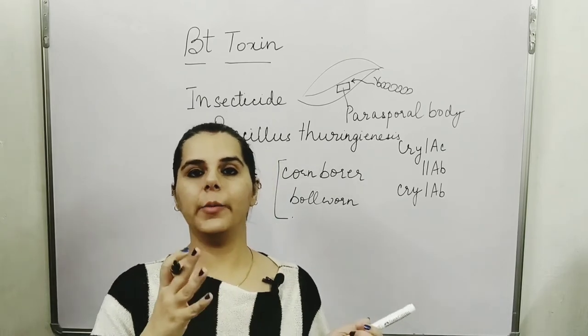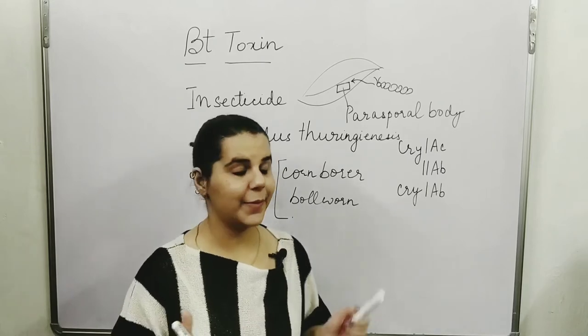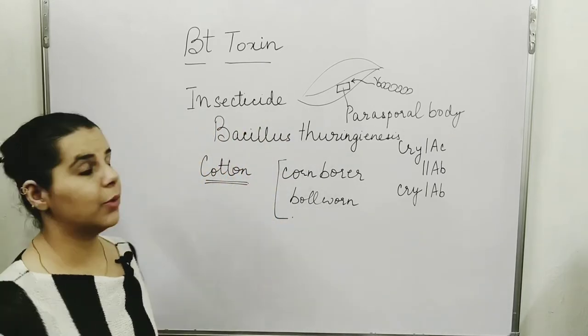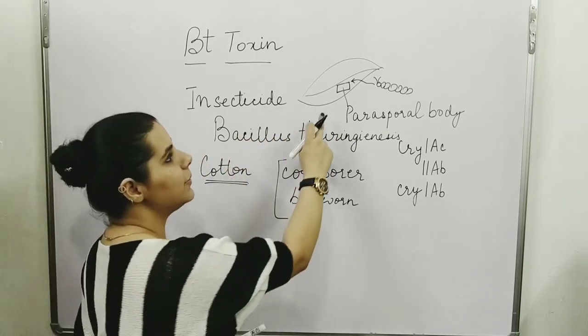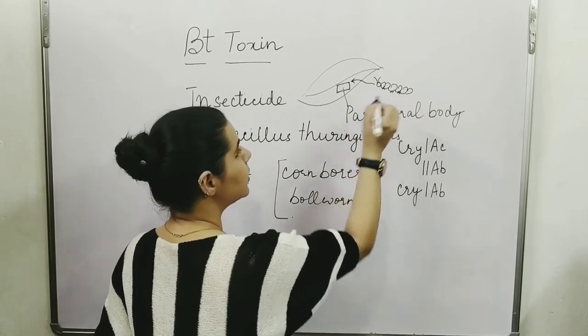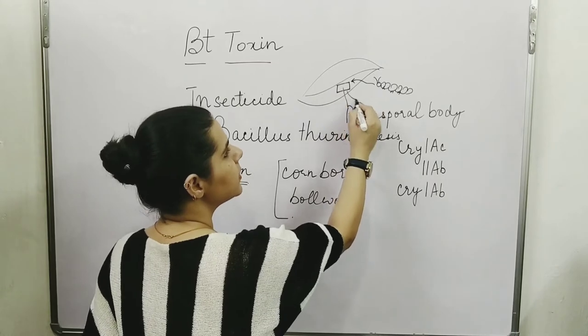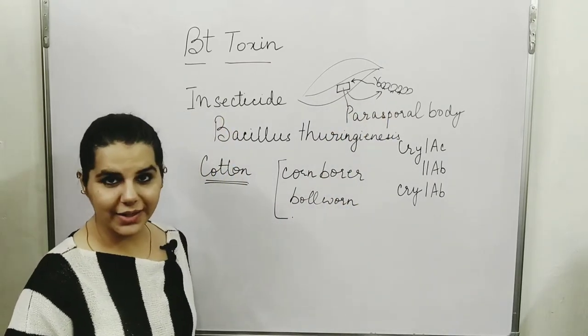The gene that produces this protein we call cry gene. So cry gene produces crystalline protein. This crystal protein is the parasporal body. And after that, when the larva comes to eat the leaf, it will ultimately ingest this crystalline body, this parasporal body.